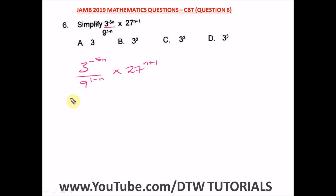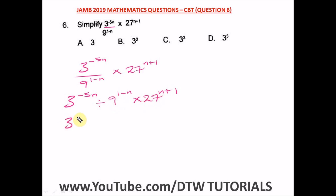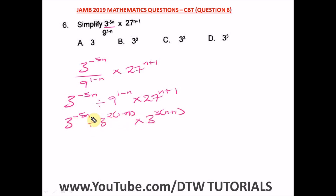So from here, we convert to base three. Nine equals three squared and 27 equals three cubed. So we have three to the power four minus five n, divided by three squared bracket one minus n, times three cubed bracket n plus one.